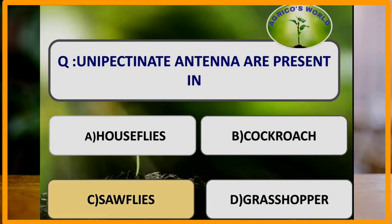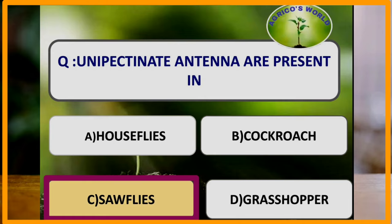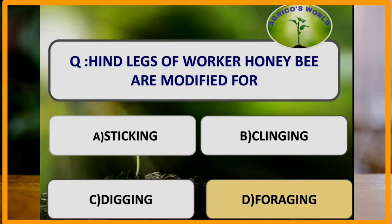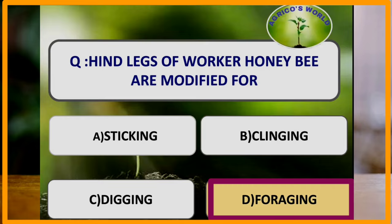Unipectinate antennae are present in sawflies. In unipectinate antennae, the segments possess lateral processes on one side giving a comb-like appearance. The hind legs of the worker honeybee are modified for foraging.